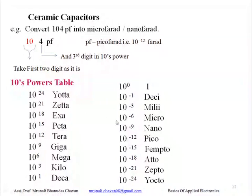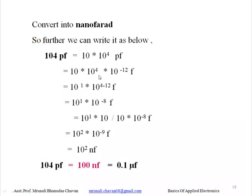Using this table we now know the powers of ten and how they are identified. In the previous lecture we had seen microfarad; now we have to convert the picofarad value into nanofarad. Let us see the example of 104 pF. To convert 104 pF into nanofarad, we follow some steps: take the first two digits as they are — that is 10 — and write the third digit as a power of ten. So we write 10 into 10 raised to 4 picofarad.